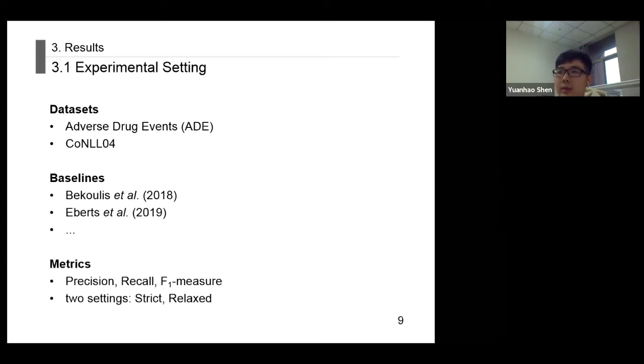The baselines we used are recent methods for the two datasets. For example, the joint extraction method based on multi-head selection proposed by Bekoulis et al. in 2018, and the span-based joint model proposed by Eberts et al. in 2019. We have followed the comparison methods in all aspects, such as the segmentation of datasets, the setting of cross-validation, and the evaluation.